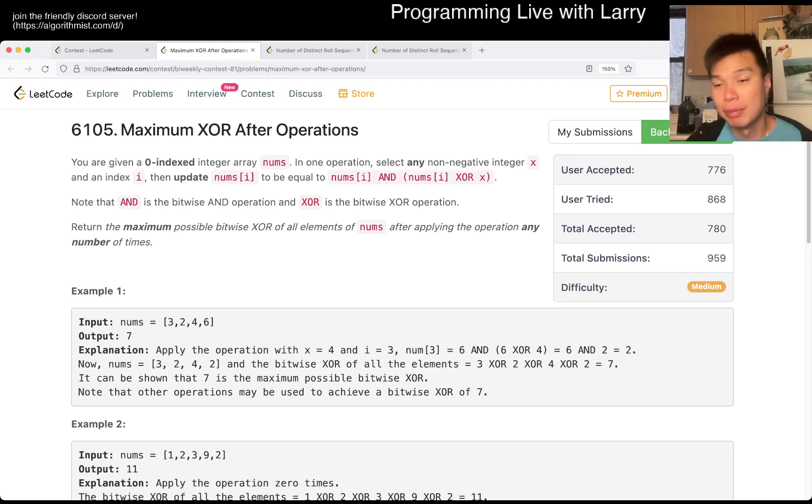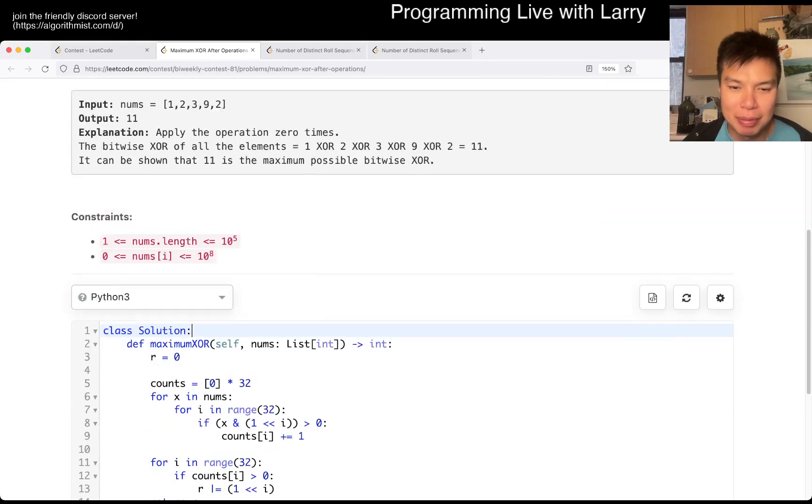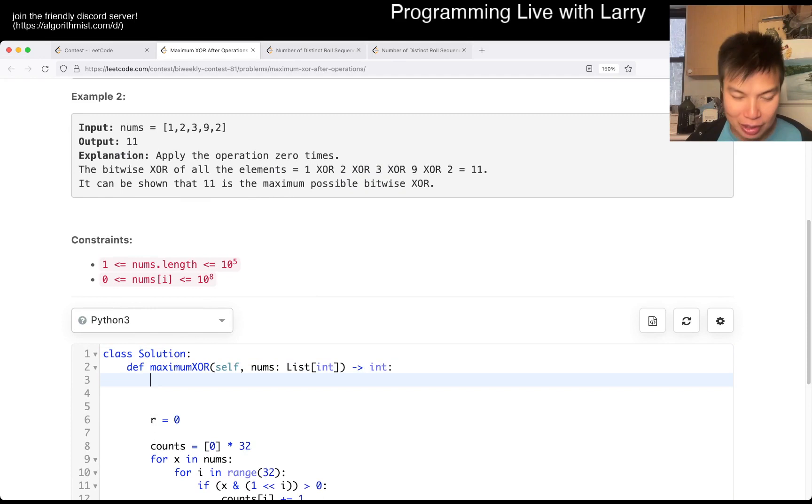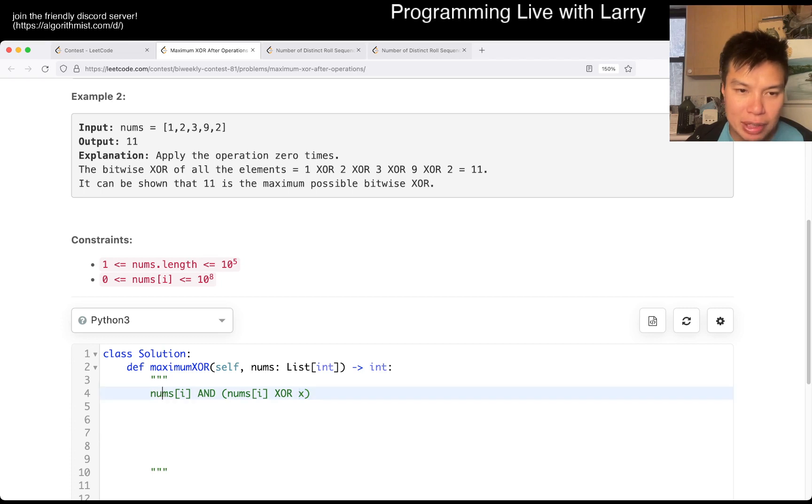So I think the first part, and maybe the trickiest part, is trying to figure out what this is. Honestly, I think that's the hard part, and once you figure that out, it does become easier. A little bit spoiler alert, but let's say we have this, right? X is the number that we choose, so these are the previous numbers. Here, the way that I would think about it is by using a truth table.